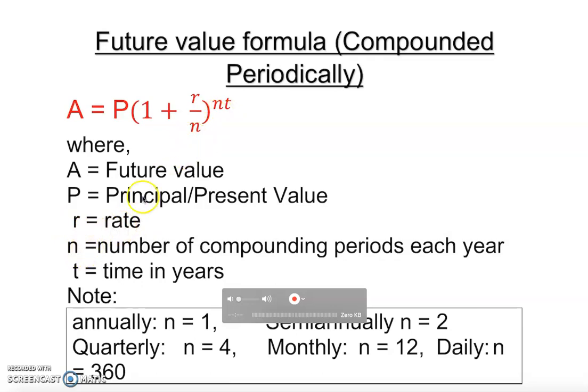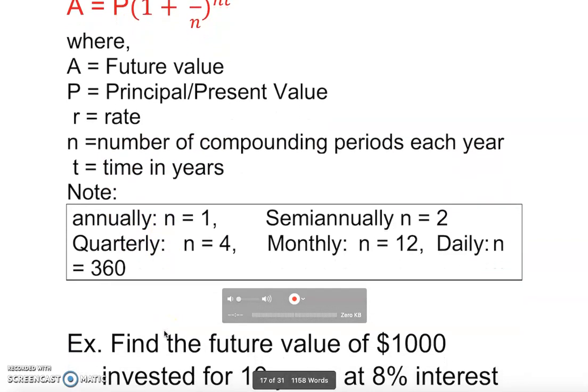The only difference here is n, which we haven't seen earlier. n is called the number of compounding periods each year. If it says annually in the problem, n equals one. Semi-annually, n equals two. Quarterly is four, monthly is twelve, and daily is 360. It's not 365 because banks use an accounting of 360 days.